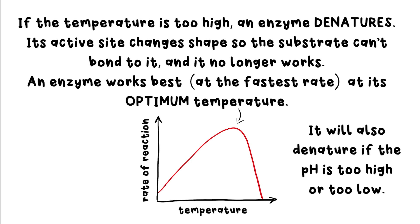There's a couple of experiments you can do to find the optimum temperature and pH of enzymes, and they just differ ever so slightly. Let's see what they'd look like if we used amylase and starch. Let's do the pH version first.